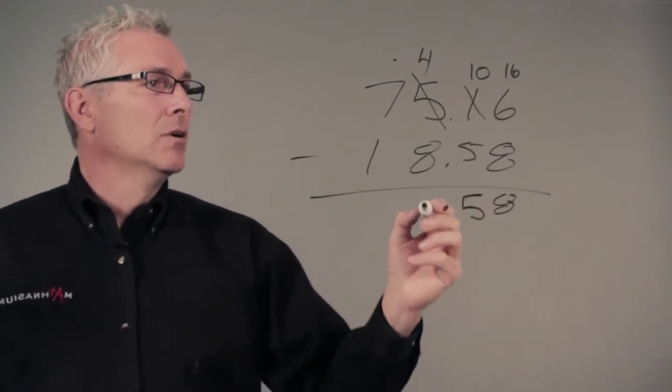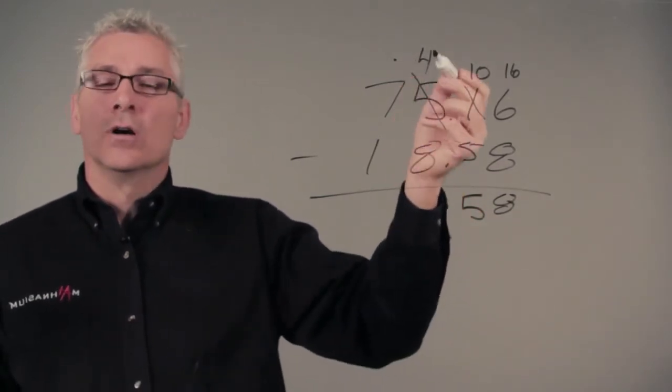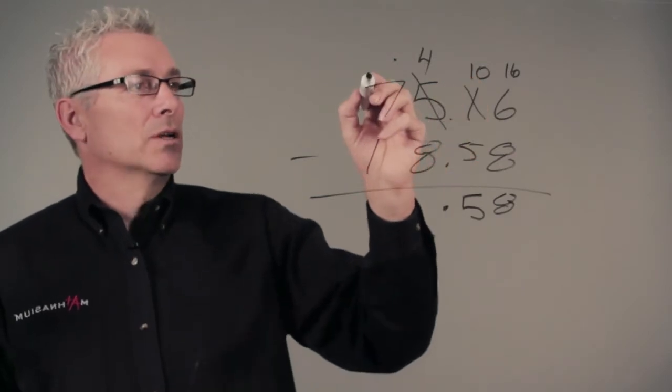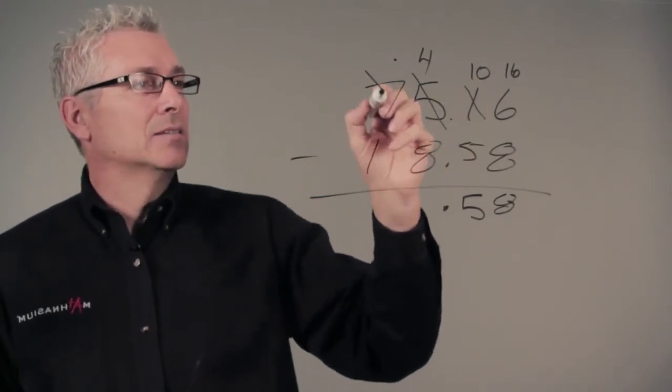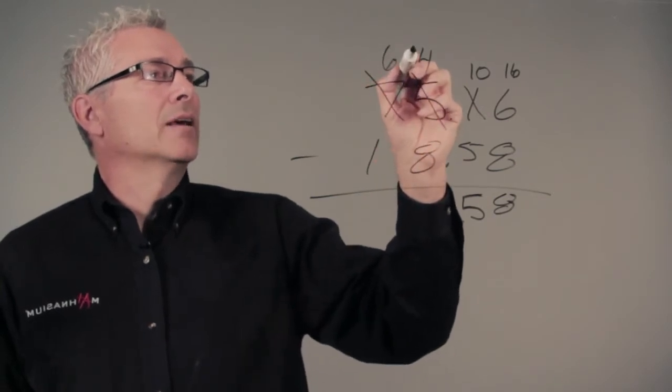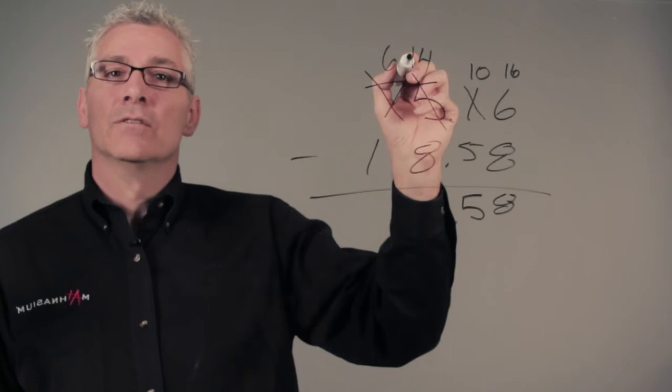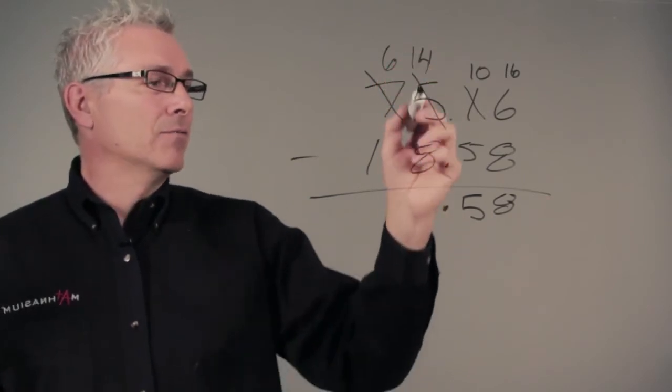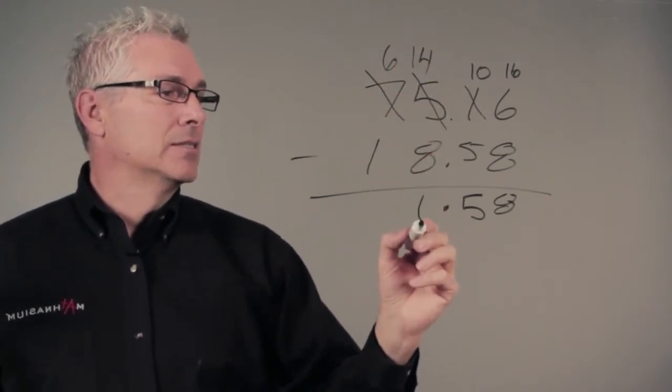Don't forget to put down your decimal. Now we're subtracting eight from four. Again, it's too much. We're going to take our seven tens. We're going to make that into six tens. We're going to borrow one ten, add it to four, which is going to be fourteen. Eight from fourteen is six.